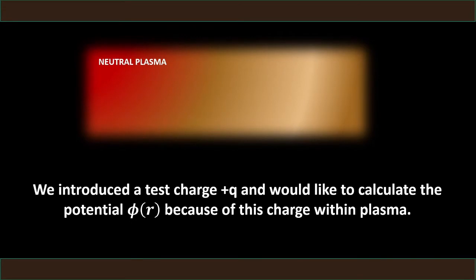We are given a quasi-neutral plasma where we assume the electron density — the number of particles per meter cubed — is approximately equal to the ion density in the plasma. That's why we call it a quasi-neutral plasma. We are going to introduce a positive test charge in the system and look at the potential because of this test charge. As soon as we introduce a positive test charge in the plasma, it will attract the negative electrons towards it and repel the positively charged ions.